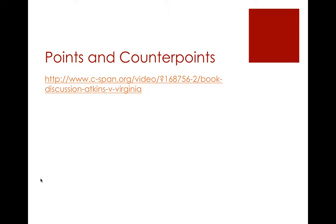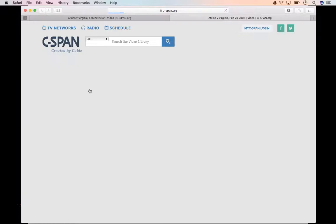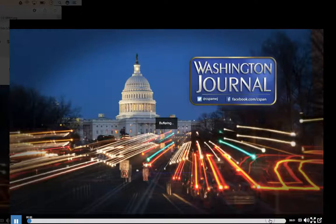Hi everyone, welcome to Part 2 of Lecture 18, where we're going to continue talking about the Atkins case. We're going to get started by watching a C-SPAN clip from when the Atkins case was being tried. I think this is important - C-SPAN isn't necessarily the most interesting thing to watch, but it gives you a good picture of what experts in the field were talking about at the time, and what some callers were thinking about whether they oppose or do not oppose the death penalty, and how they feel about the Atkins case specifically.